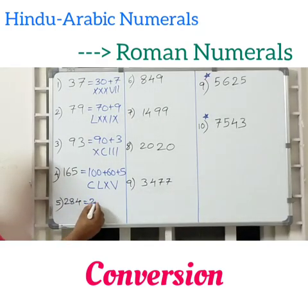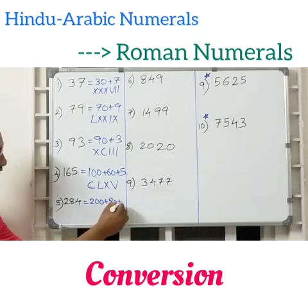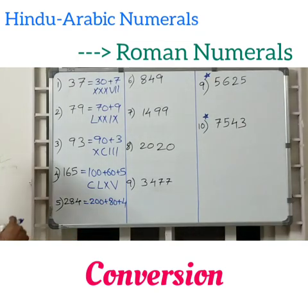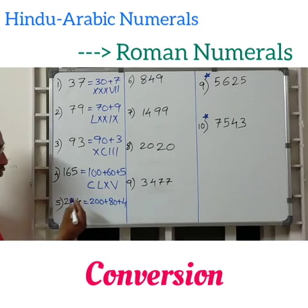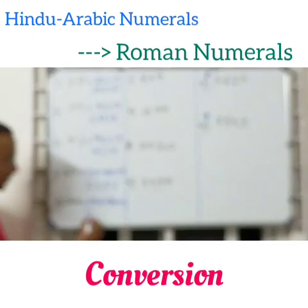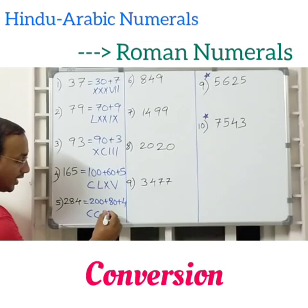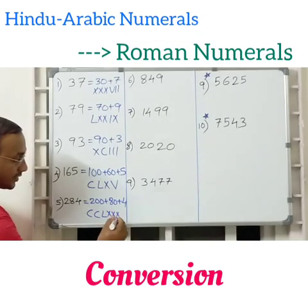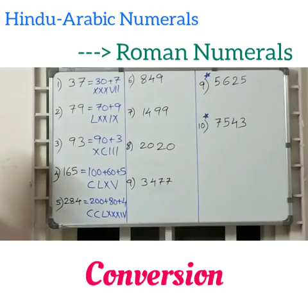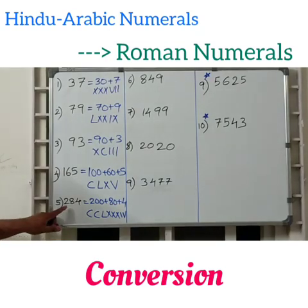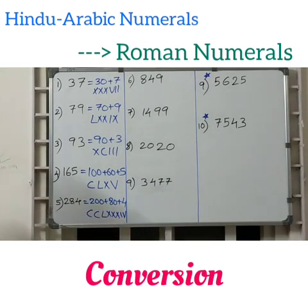Next, 284. Expanded form: 200 plus 80 plus 4. Writing the expanded form and the Roman numeral — 200 is nothing but CC, 80 is nothing but LXXX, and 4 is IV. So 284 in Roman numerals is CC LXXX IV.